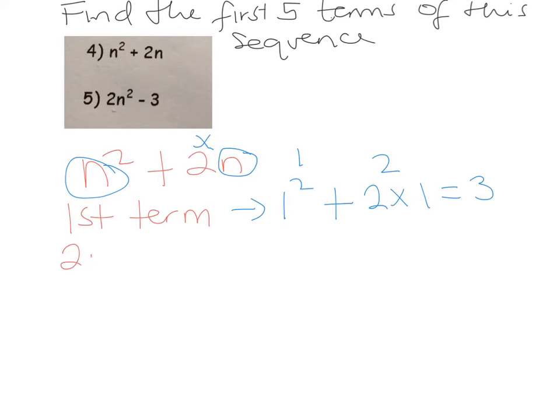To get the second term, we're going to do exactly the same thing. We're going to replace the n squared with 2 squared plus, we've got 2, but we're going to times the n by 2. 2 squared is 4, 2 times 2 is 4, add together you get 8.